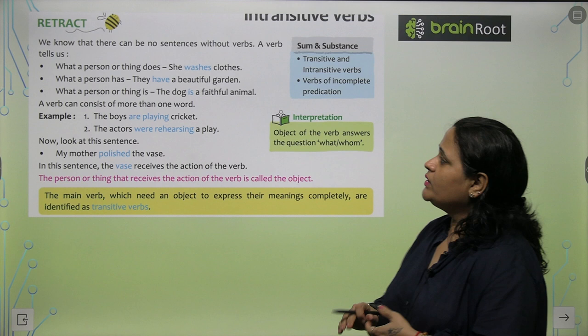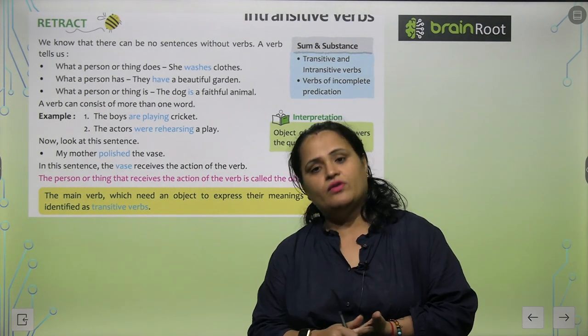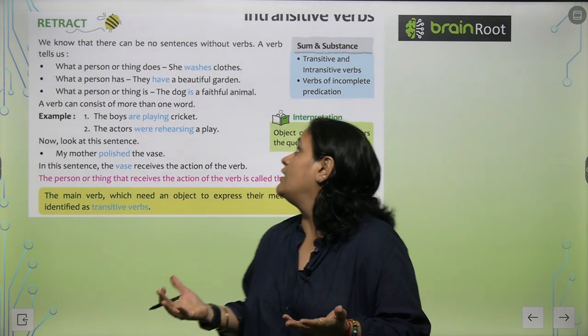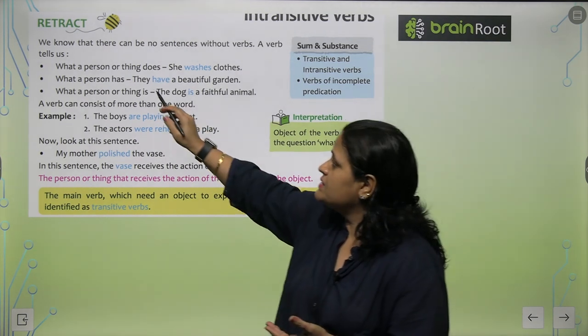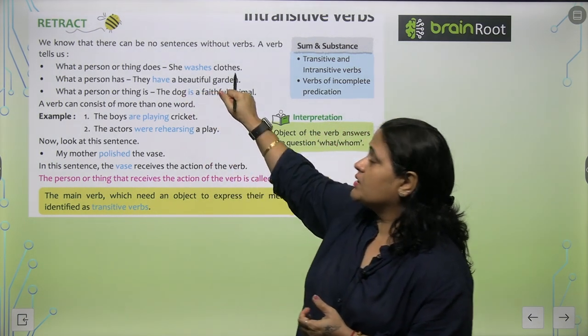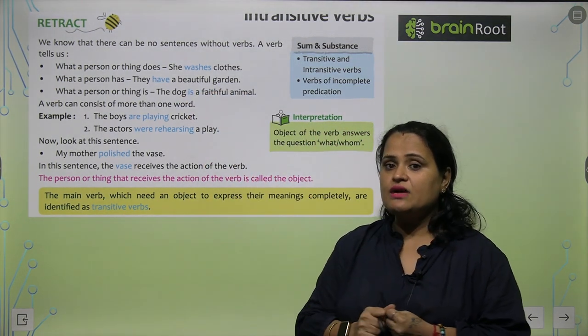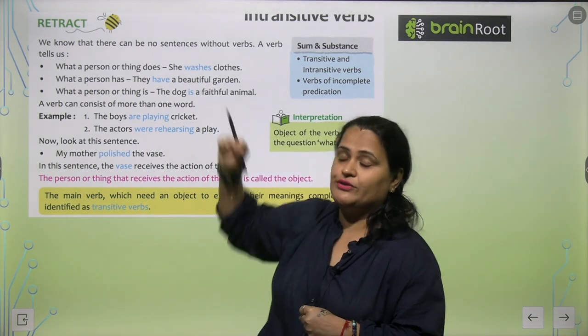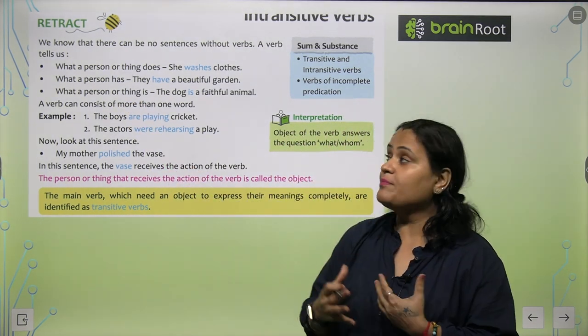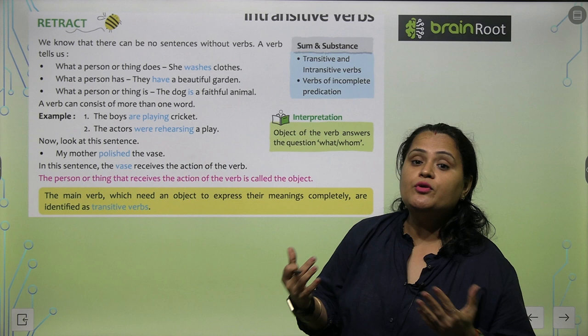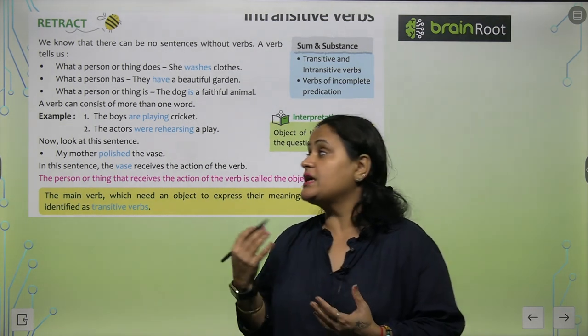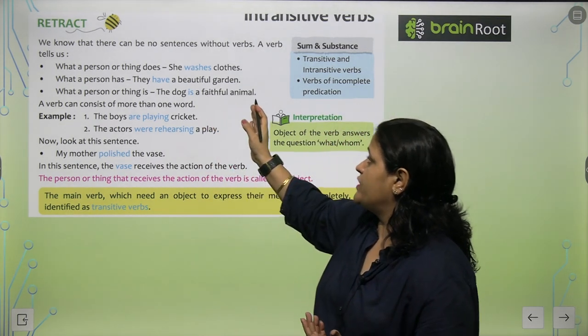Now we know that there can be no sentences without verbs. Verbs ke bina koi sentence nahi banta. A verb tells us what a person or things does. She washes clothes. A person kya kerta hai, we learn through the verb. What a person has, they have a beautiful garden. What a person or thing is, the dog is a faithful animal.